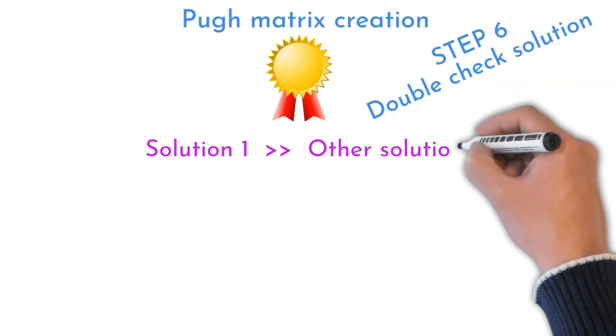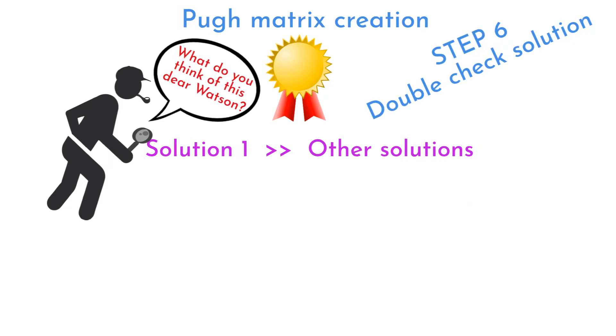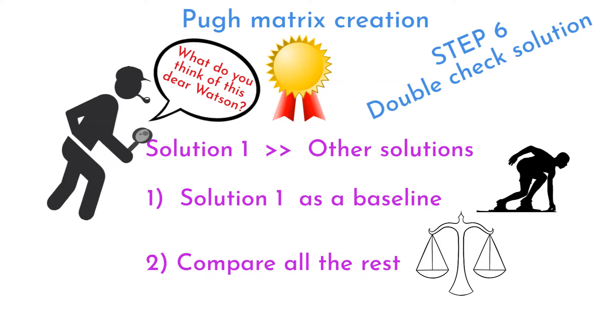In a case of one solution with evaluation number high above all other solutions, this solution should be the winner. But I suggest to double check this result. Double checking if winning solution is really the best option of all is done by set up winning solution as a baseline. All other solutions, including current state, are evaluated with reference the same way as first round of Pugh Matrix evaluation.